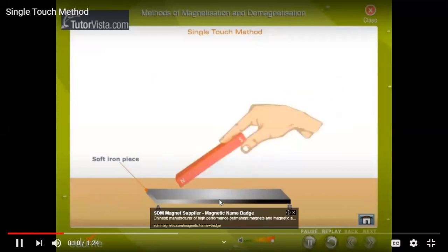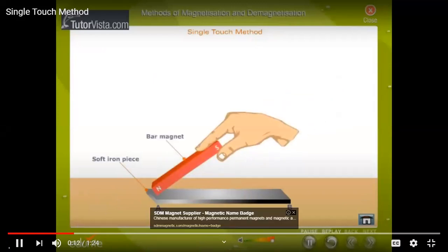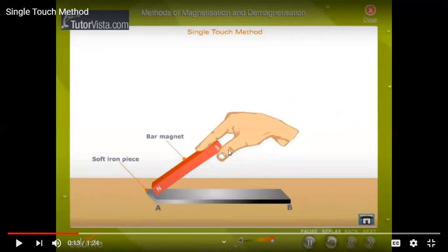Place the soft iron piece on the table, then take the bar magnet and start striking. You can see originally this soft iron piece doesn't have poles, so when we strike it...